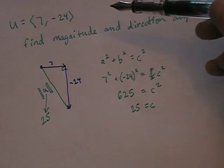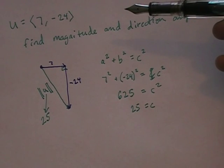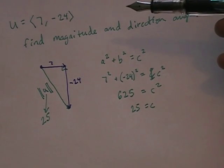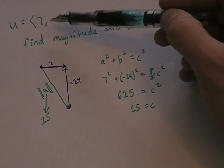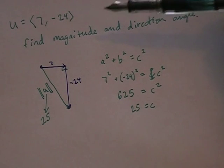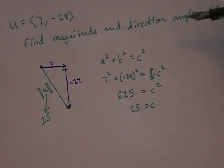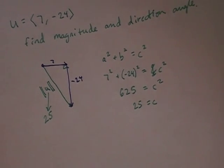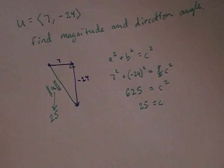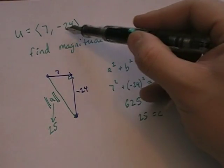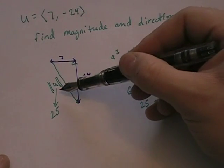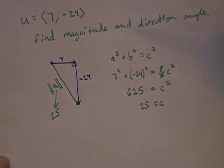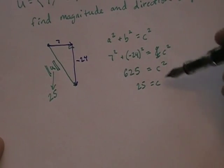And typically, vectors are going to have units. Not always, but typically they're going to have some sort of unit. And so a lot of times we'll talk about this as u equals 7, negative 24, and it'll be in pounds. It'll have some unit with it, pounds, kilograms. It could be speed. Typically vectors represent things like that. But the magnitude of a vector really is just the hypotenuse of the right triangle.